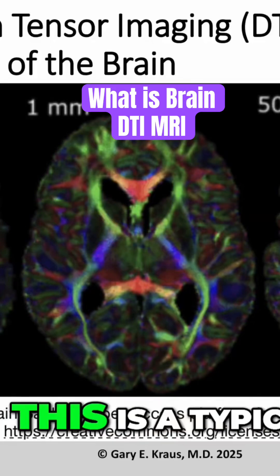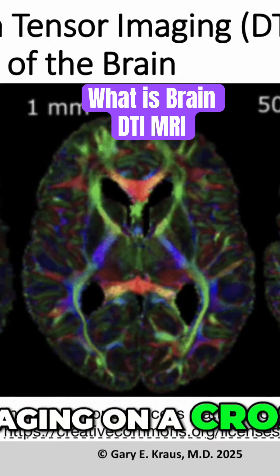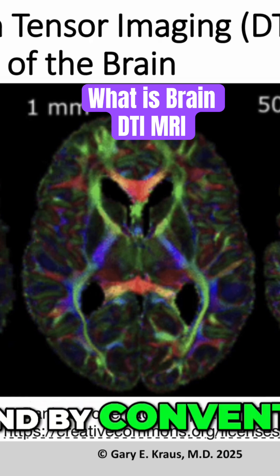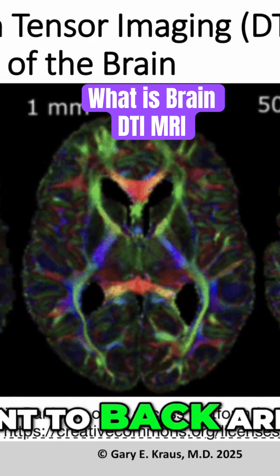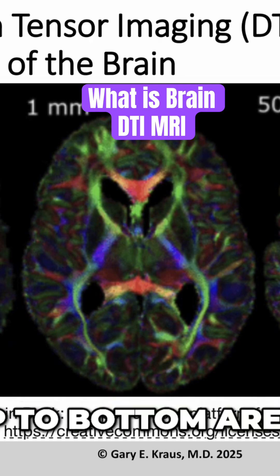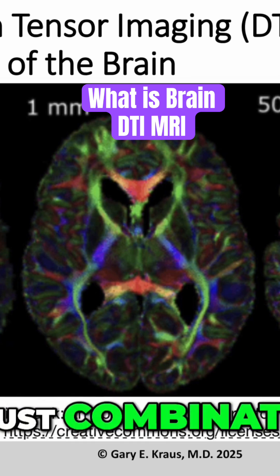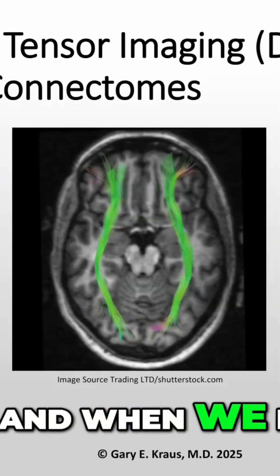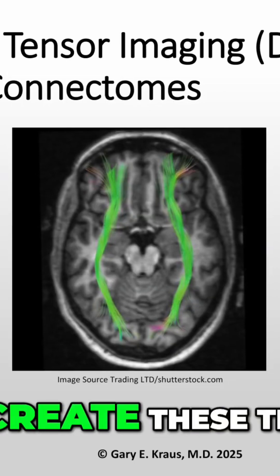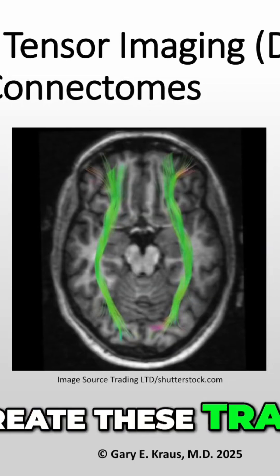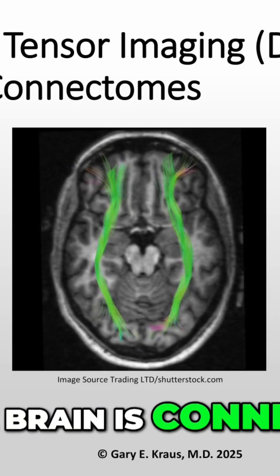You can do an amazing amount. This is a typical tensor imaging on a cross-section. By convention, any fibers going right to left are red, front to back are green, top to bottom are blue, and any other colors are combinations as the direction is changing. When we put these together through computer processing, we can create these tractograms where we look at connectomes and see how the brain is connected.